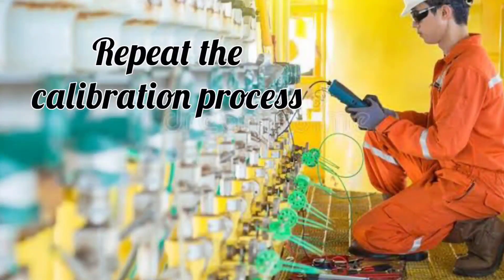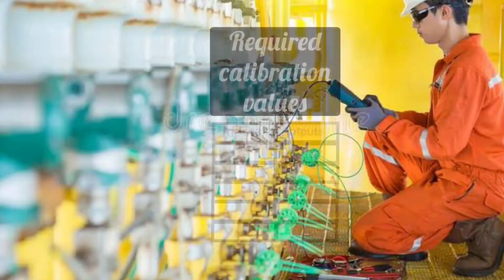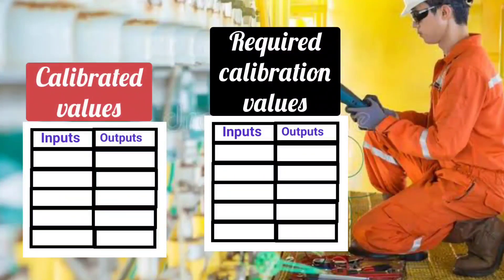In the last step, the calibration process is repeated so that device will remain within the required calibration tolerance. Means the required calibration values remain close to the calibrated values.